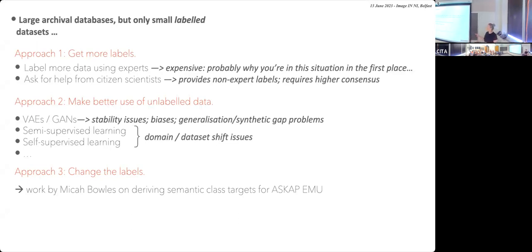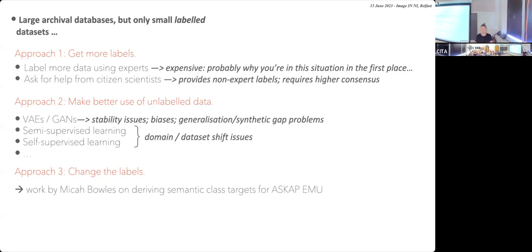A third approach, which I won't talk about but happy to discuss afterwards, is that you can change the labels. If your labels are too expensive, change the way you label your data. Why do we have to call them Fanaroff-Riley Class 1 and Class 2, which is very subjective? You can derive better semantic class targets that make your data easier to label.